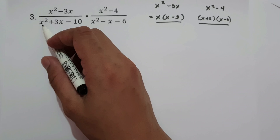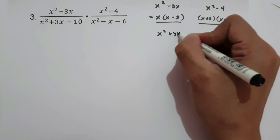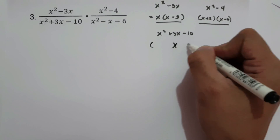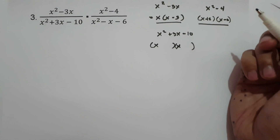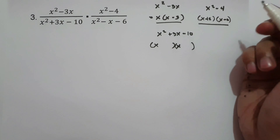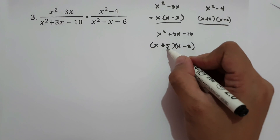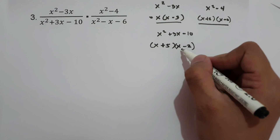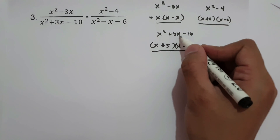For x² + 3x − 10, since a = 1 we need two numbers that multiply to −10 and add to +3. That is +5 and −2: 5 times −2 is −10, and 5 plus −2 is +3. So x² + 3x − 10 factors as (x + 5)(x − 2).